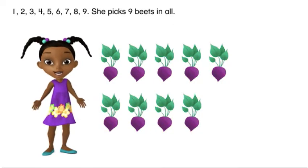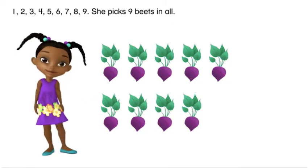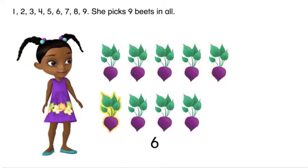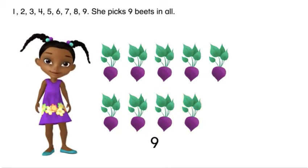Let's count! One, two, three, four, five, six, seven, eight, nine. She picks nine beets in all.